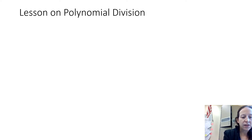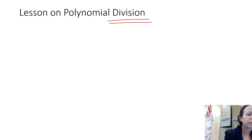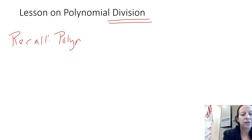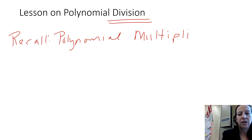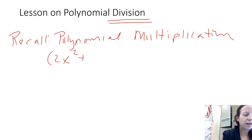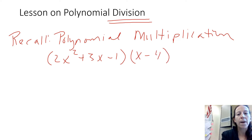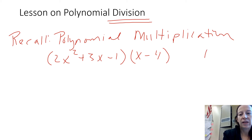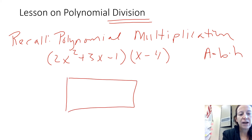Before we get into that, we need to make sure we ground what we're doing when we're doing division. I want you to recall polynomial multiplication — we're going to start with a little review. So for multiplication, if I have something like 2x squared plus 3x minus 1 and I multiply that by x minus 4, we can use an area model to figure out what the product is. The area of a rectangle is base times height, so we set up this rectangle.